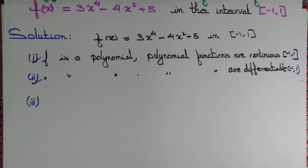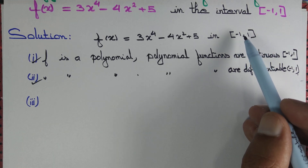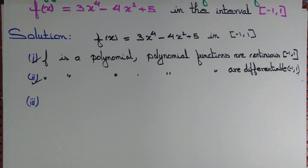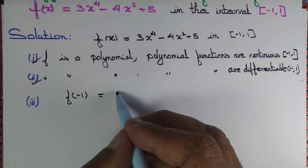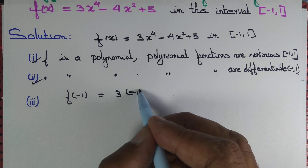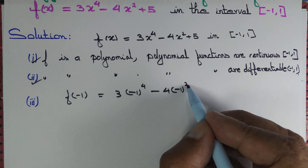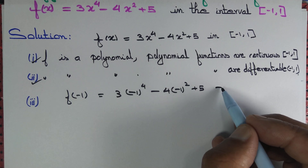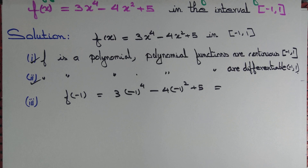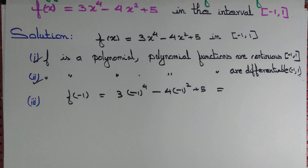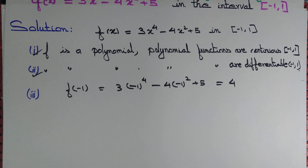The third criterion is that the value of the function at the endpoints must be the same. f(-1) = 3(-1)⁴ - 4(-1)² + 5 = 3 - 4 + 5 = 4. So f(-1) = 4.